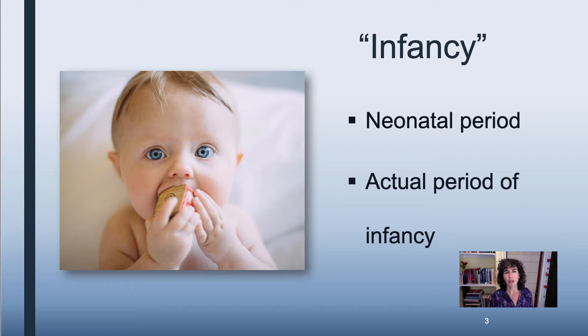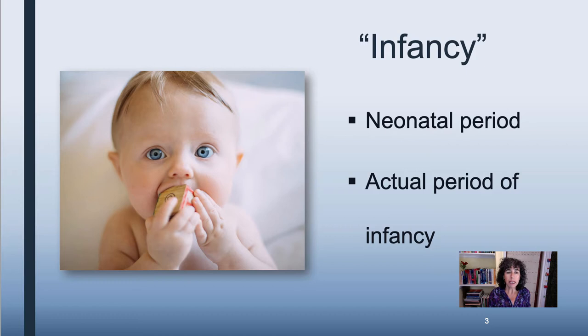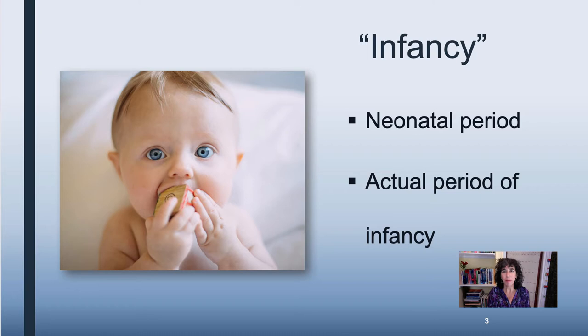When we think about newborn and infant development, we first need to define what infancy exactly means. In a general way, infancy is the period between birth and 12 months. During this time, it's divided into a couple of smaller areas, and the neonatal period is the first of those — the first four weeks after birth — during which there are transitions in all domains of function. It's the time when the baby goes from being in utero to out in the bigger world, and everything about that child's life changes dramatically with the advent of birth.